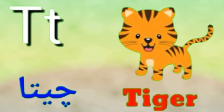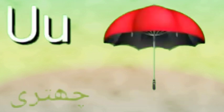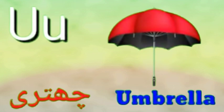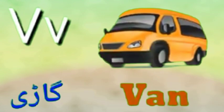T is for Tiger, Tiger means Cheetah. U is for Umbrella, Umbrella means Chhatri. V is for Van.